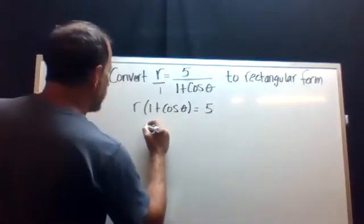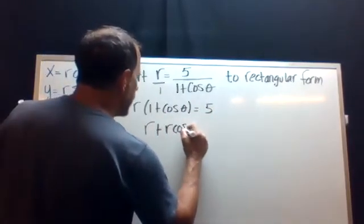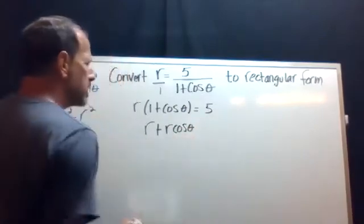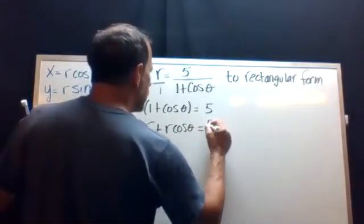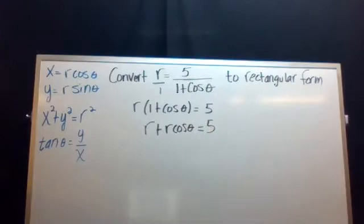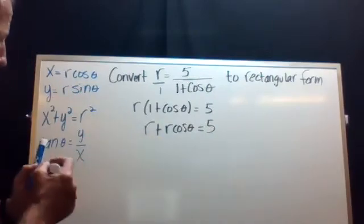And of course, this is going to give us r plus r cosine theta. That was that little nugget that we just needed to see. Finally saw that r cosine theta. That is x.